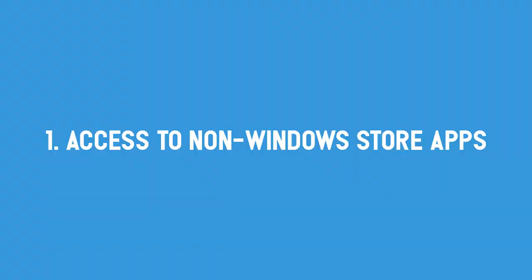First: access to non-Windows Store apps. On Windows 10 S you cannot download third-party applications, whereas you can on the other two versions. However, native Windows Store applications can be downloaded on all three versions of Windows 10.